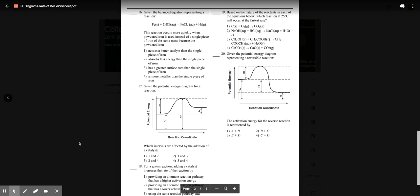The balanced equation representing a reaction: this reaction occurs more quickly when powdered iron is used instead of a single piece of iron because the powdered iron has greater surface area. It's not a catalyst, it's not going to be more metallic, and it's not going to absorb less energy.